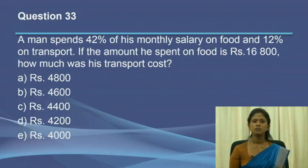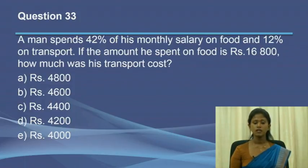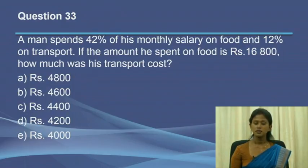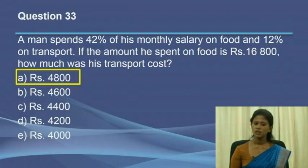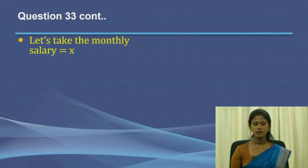Question number 33: A man spends 42% of his monthly salary on food and 12% on transport. If the amount he spent on food is 16,800 rupees, how much was his transport cost? We will move on to the steps which show us how we obtain the answer.